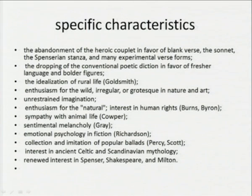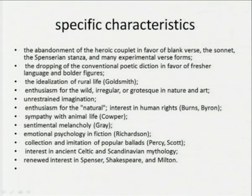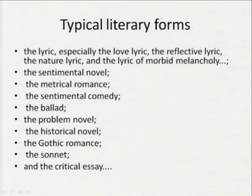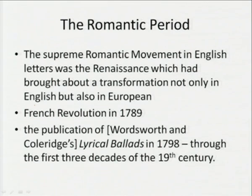The dropping of conventional poetic diction in favor of fresher language and bolder figures; the idealization of rural life; enthusiasm for the wild, grotesque, and irregular in nature and art; unrestrained imagination; enthusiasm for the natural; sentimental melancholy as in Thomas Gray; emotional psychology in fiction; collection and imitation of popular ballads; renewed interest in Spenser, Shakespeare, and Milton. Typical literary forms were the lyric — love lyric, reflective lyric, nature lyric, lyric of morbid melancholy — the sentimental novel, metrical romance, sentimental comedy, the ballad, the problem novel, historical novel, Gothic romance, sonnet, and critical essay. The Romantic age in its creative output was abundant and most fascinating.